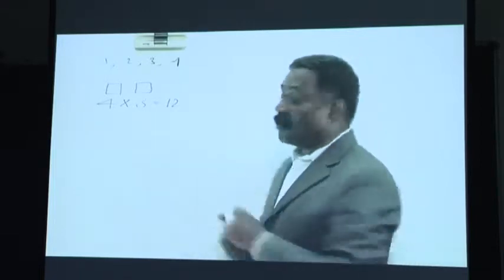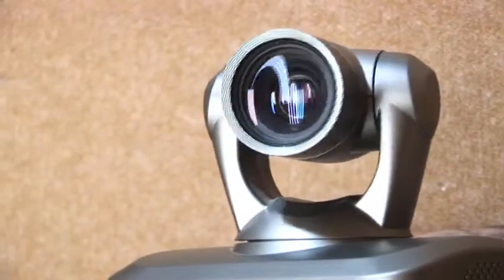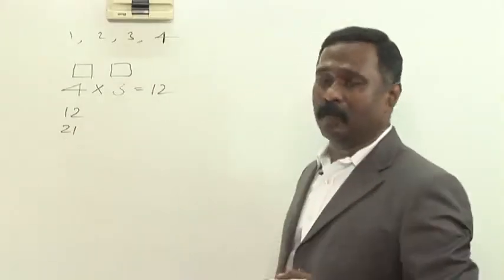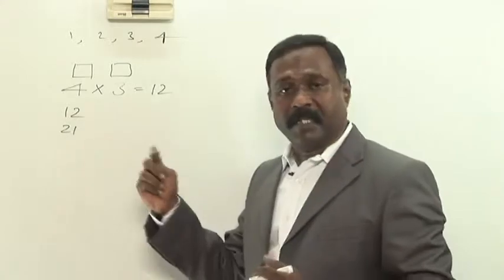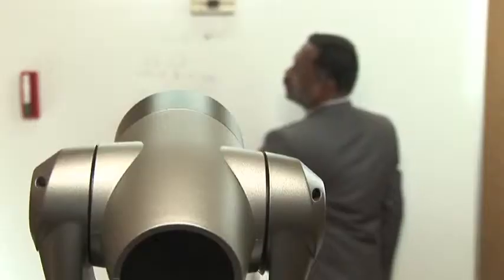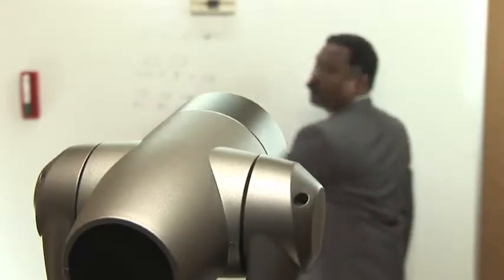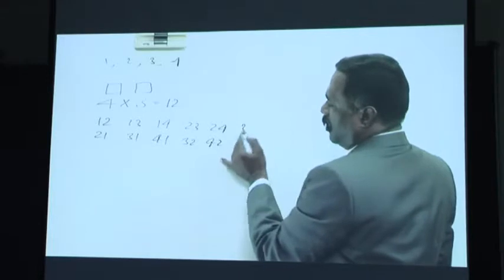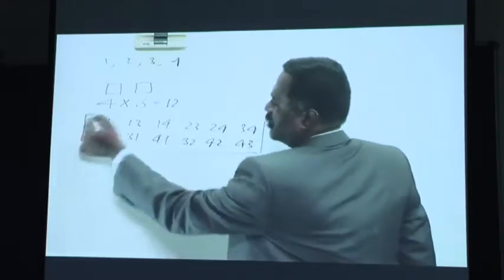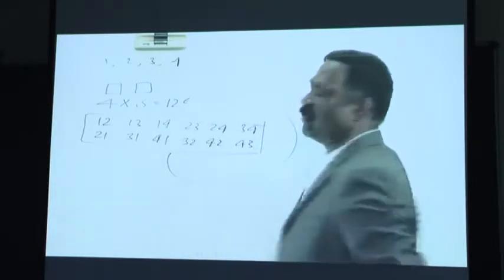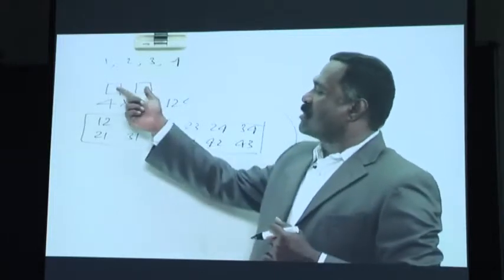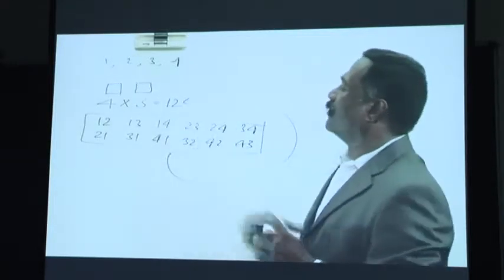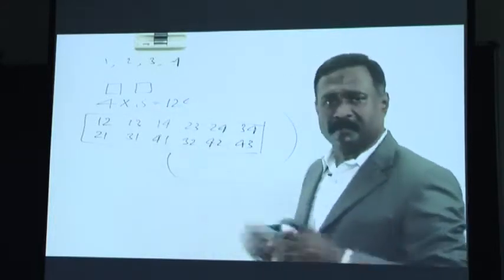Let us verify this practically without applying the fundamental theorem. These twelve arrangements are: 12, 21, 13, 31, 14, 41, 23, 32, 24, 42, 34, 43. Permutations are nothing but arrangements of things — that is why I have rearranged them. You can count these — they are totally twelve different arrangements. So you can form twelve two-digit numbers from the given digits 1, 2, 3, 4, and these twelve are shown separately for your better understanding.